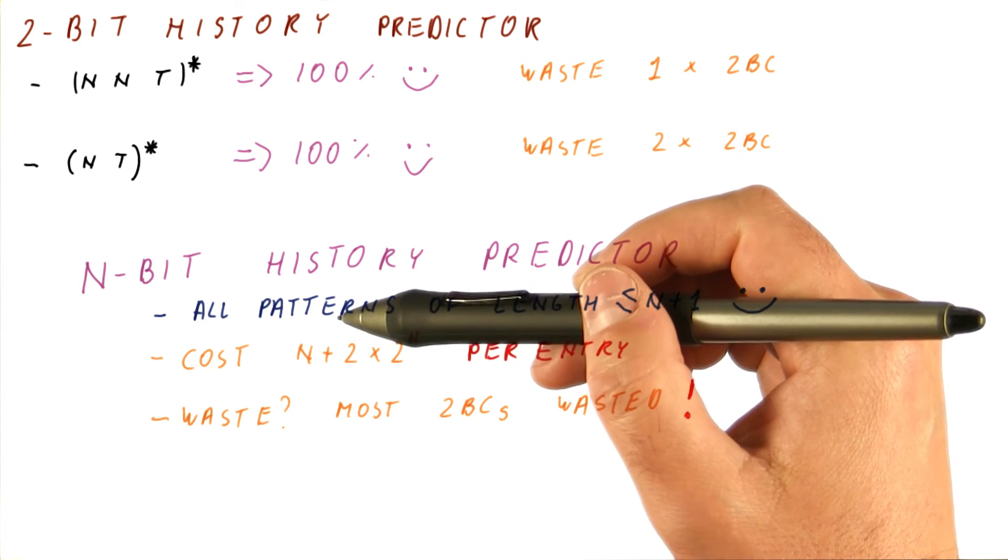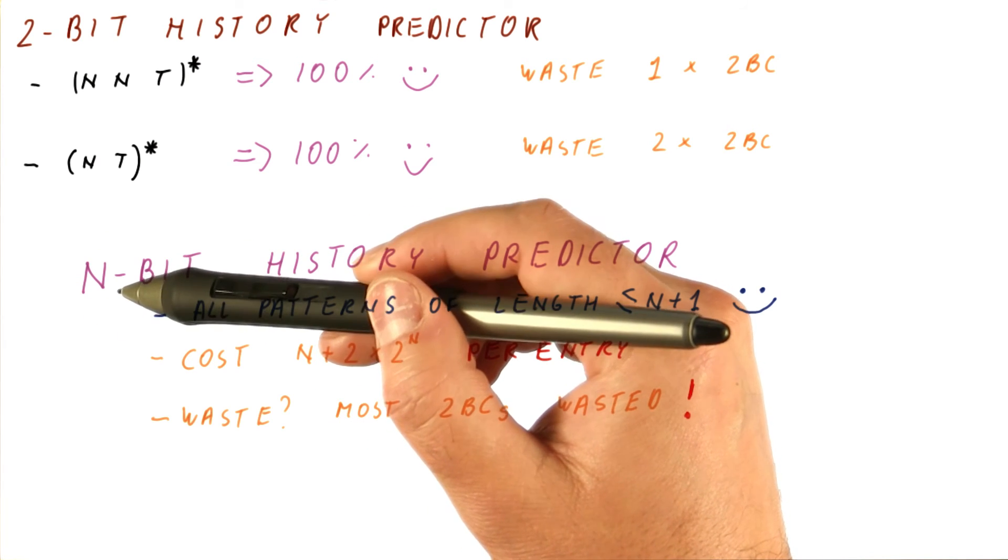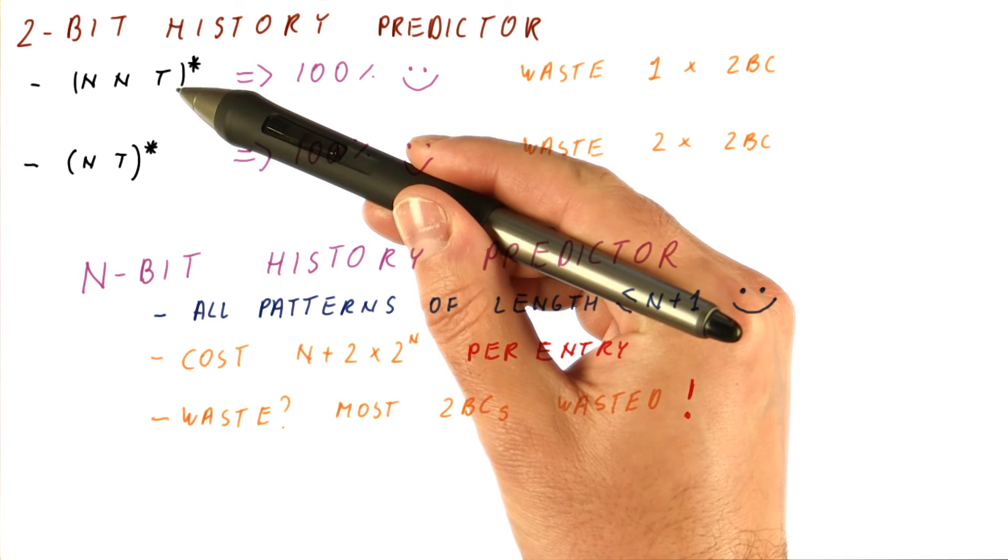So the question is, why would we want to have n large? Why not just settle for something like patterns of length three?